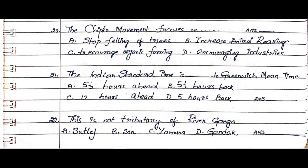Question 22: This is not a tributary of river Ganga. Option A. Sutlej, Option B. Son, Option C. Yamuna, Option D. Gandak. The answer is Option A. Sutlej.